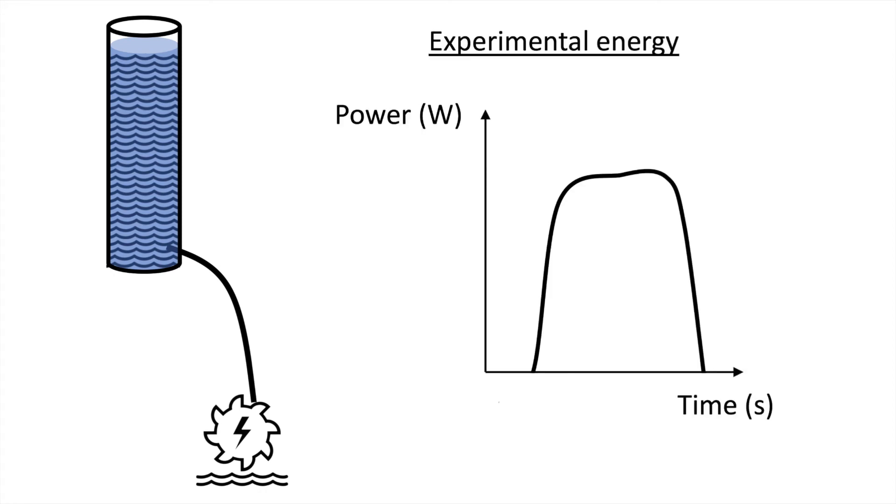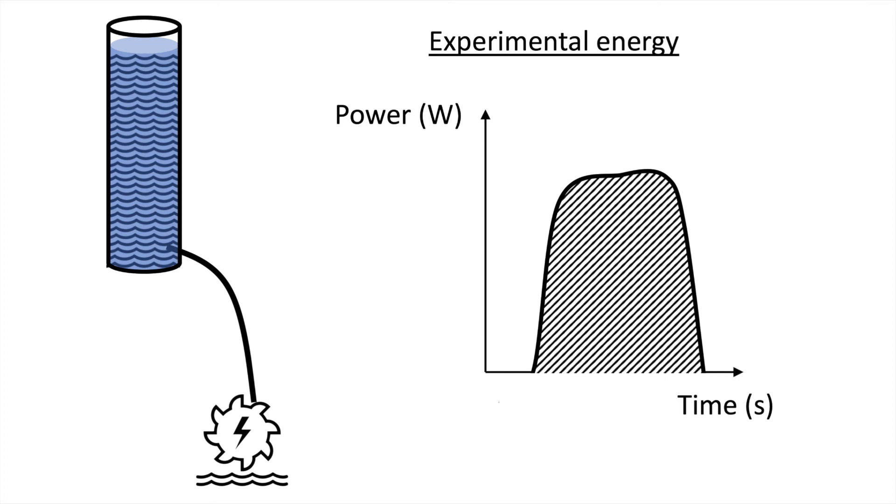Now, if we want the efficiency, we have to determine it experimentally. With the graph we got on the spec, we got the power in watts and the time in seconds, and the curve more or less like this. The area under the curve would then be the energy in watts times second, which is equal to joules.